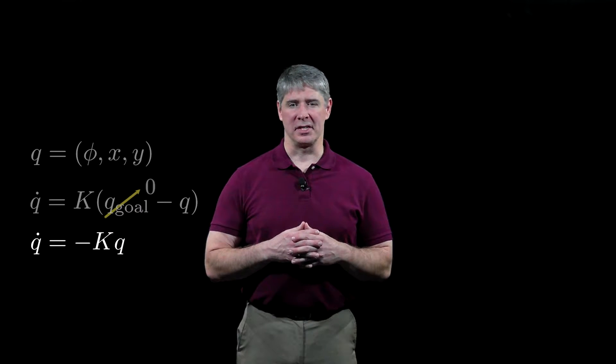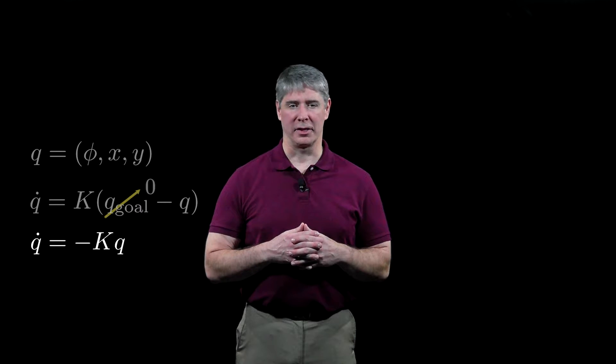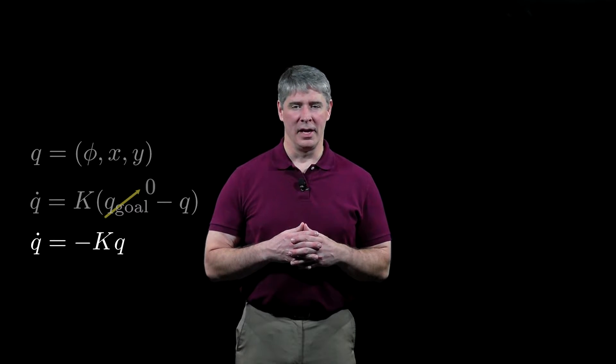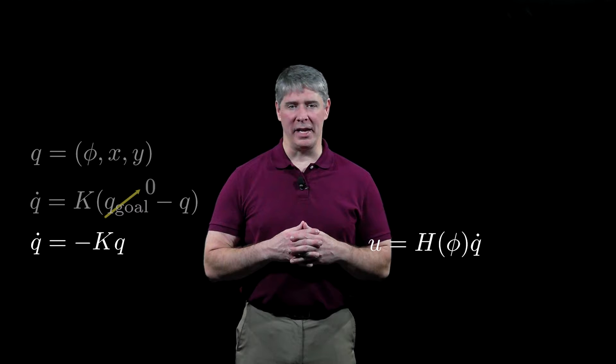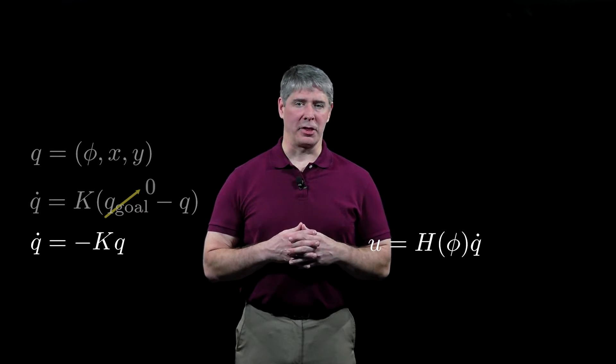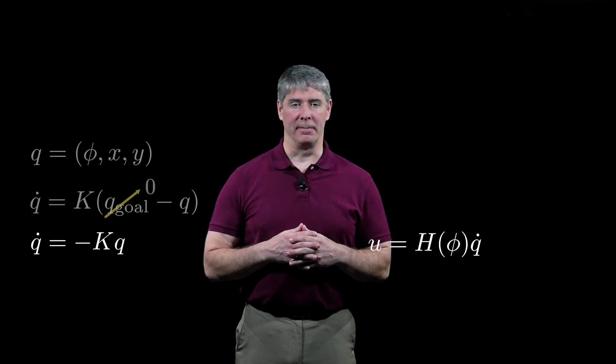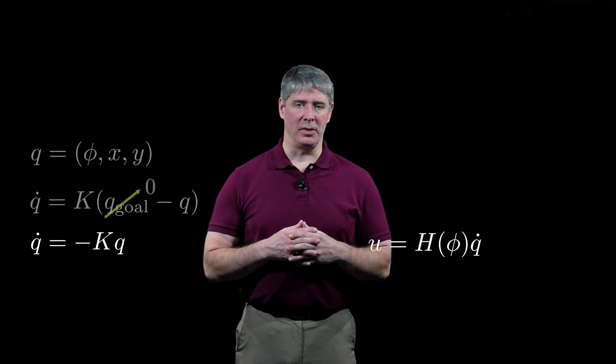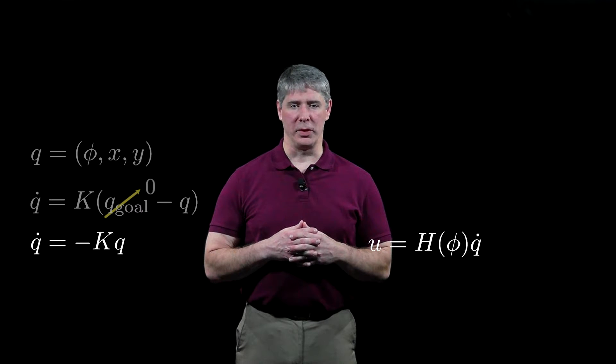This controller only works because the chassis velocity Q dot and the controlled wheel speeds U satisfy U equals H of phi times Q dot, where H is rank 3 as we learned in an earlier video. This means that any Q dot can be achieved by some choice of wheel speeds U.